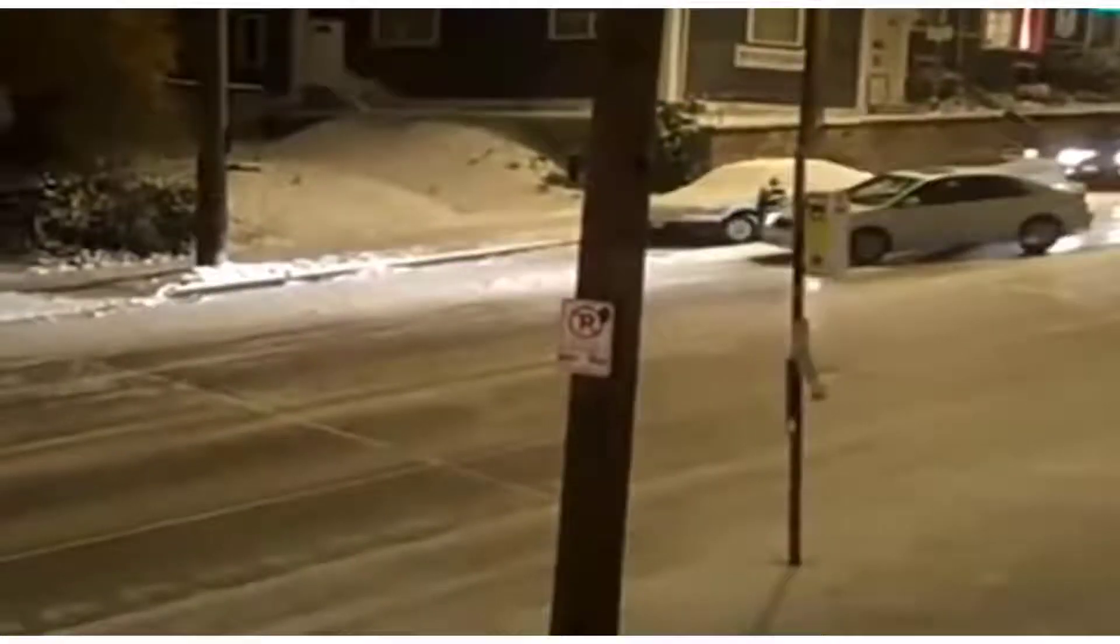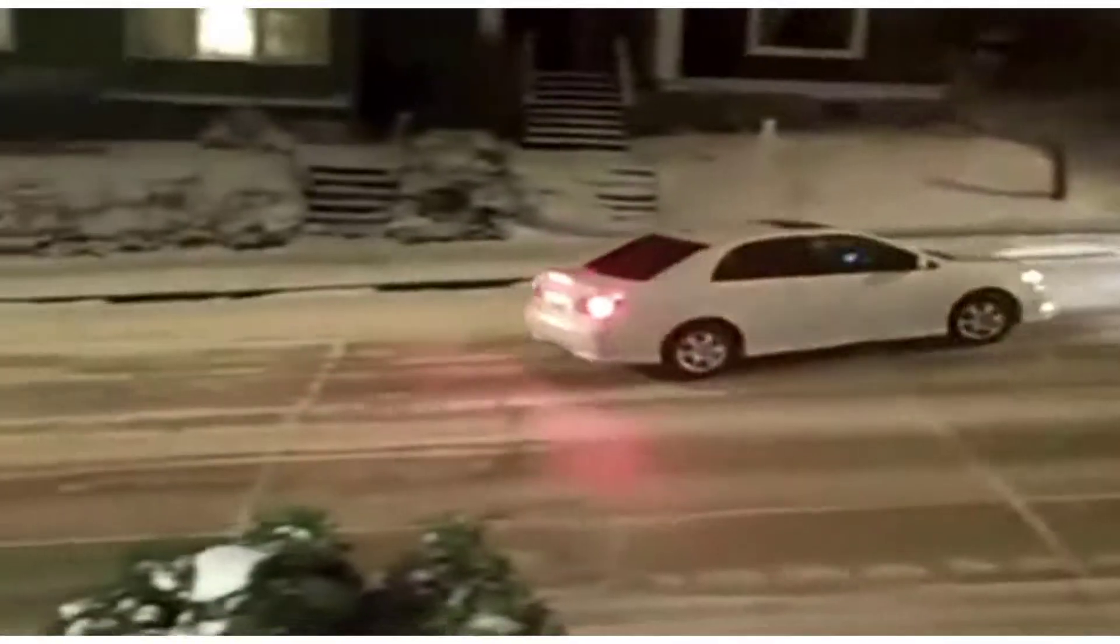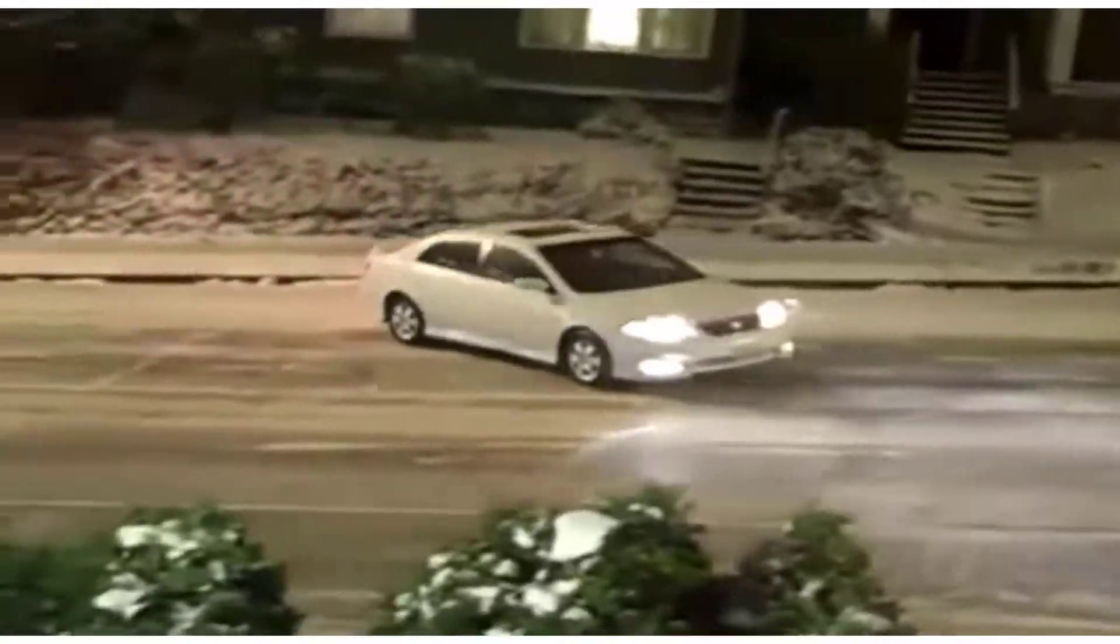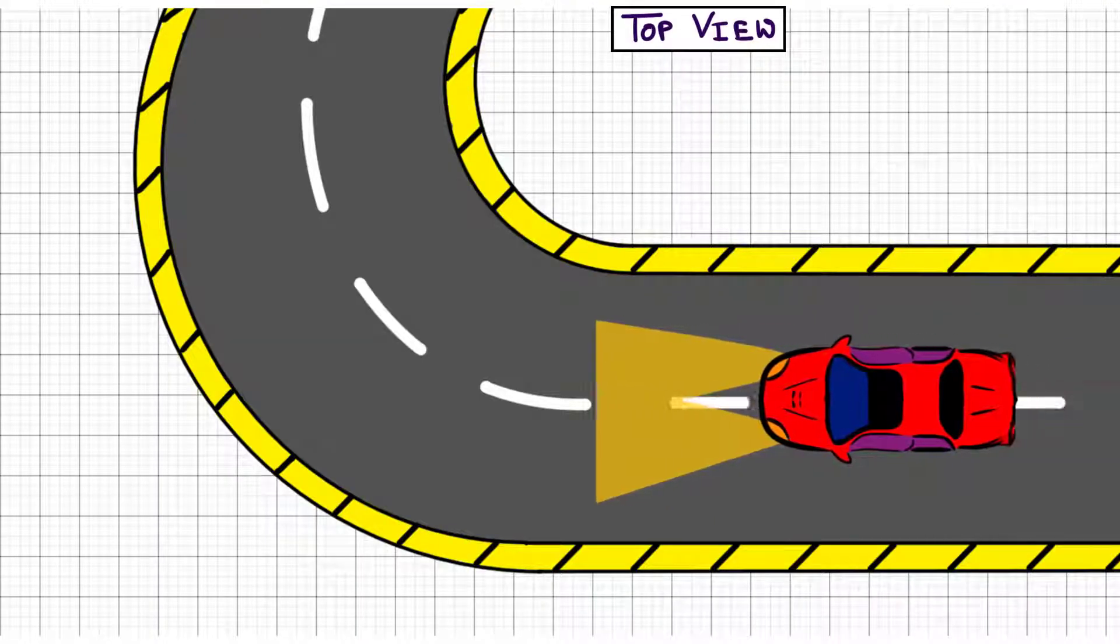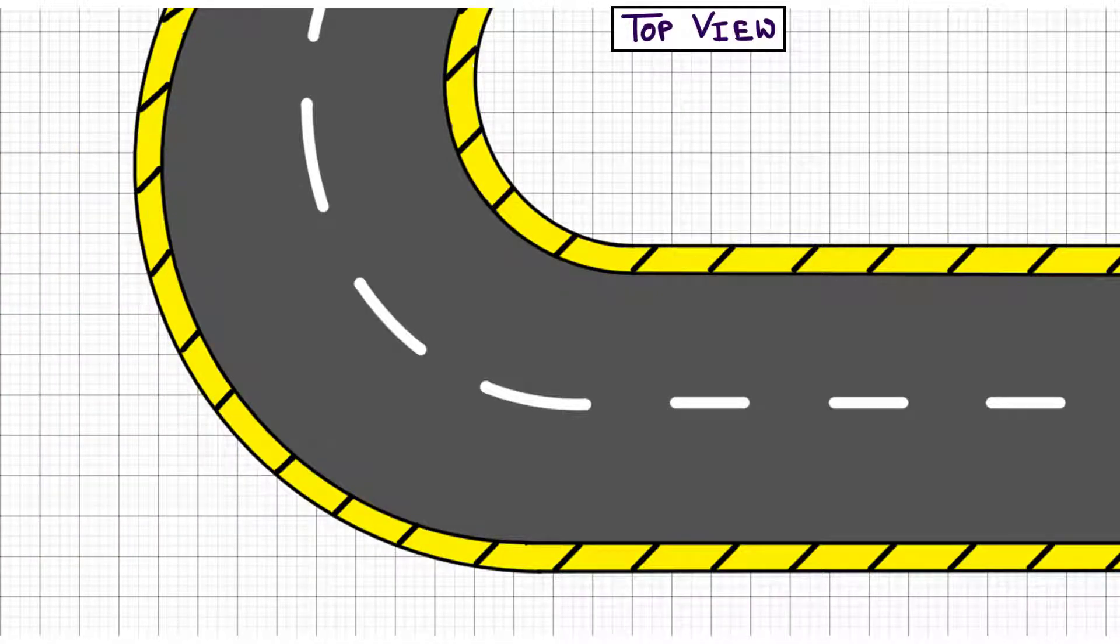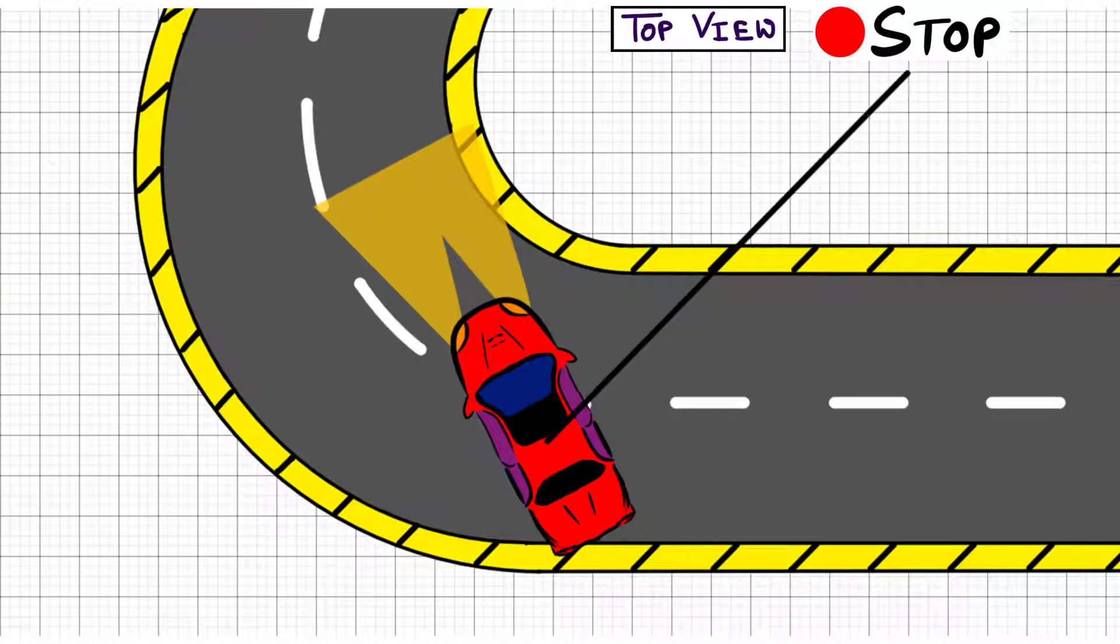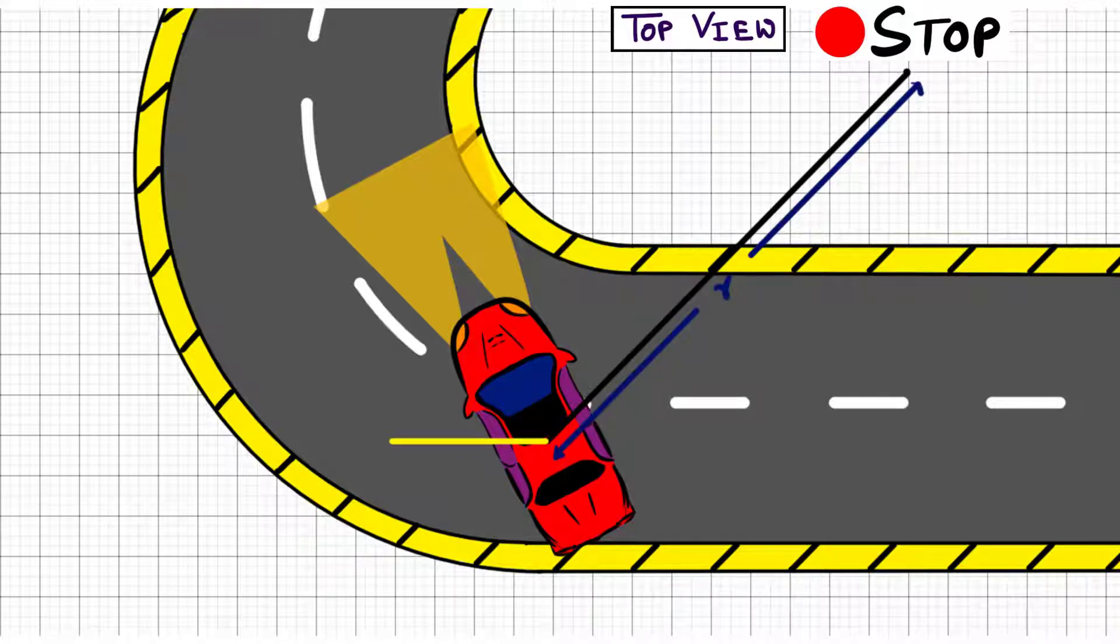You might have seen accidents like these. This happens because cars follow a circular path while making turns, and to make turns happen, the frictional force between the track and the wheel provides for the centripetal force. But since the car has greater instantaneous velocity, the required centripetal force turns out to be higher than the static friction between the track and the contact point on the wheel.